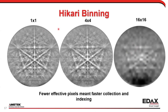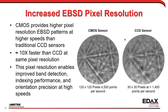With CMOS-based sensors, no binning is needed to gain speed. At max speed of 4,500 patterns per second, you can still save high-quality patterns. The CMOS-based sensor gives much higher quality patterns for post-processing compared to what the CCD-based sensor required. This allows much higher pixel-resolution EBSD patterns at much higher speeds — literally 10 times faster than older CCD technologies — with good indexing performance and improved band detection.